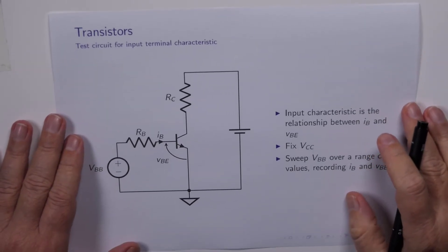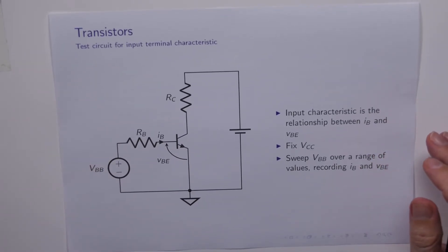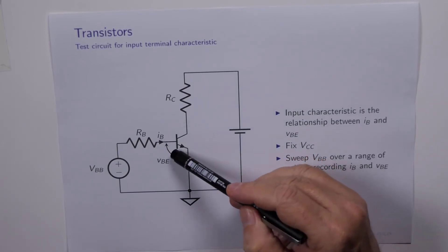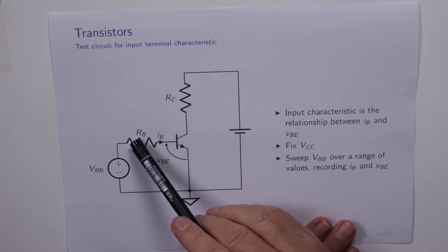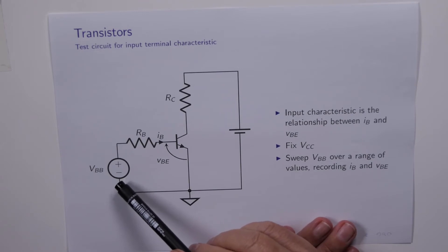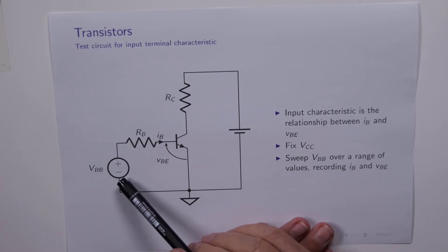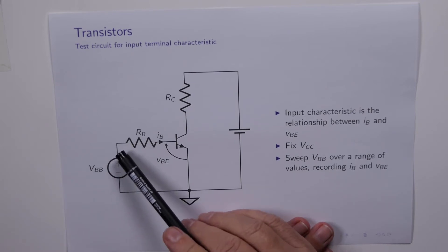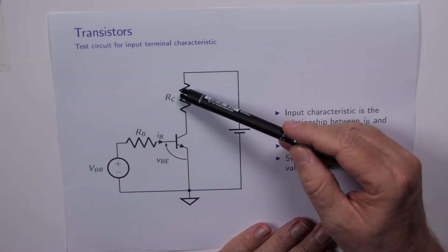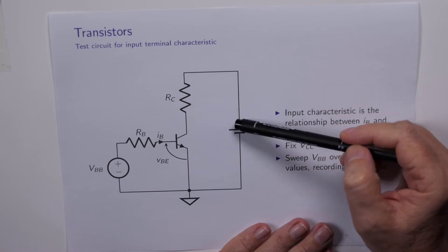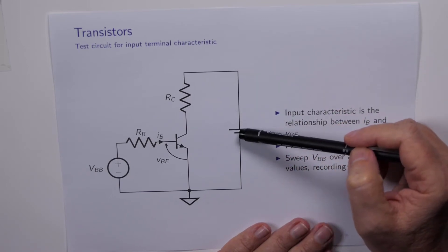So let's have a look at the test circuit for determining what we call the input terminal characteristic. Here it is. We've got the transistor sitting in the middle here, our NPN transistor. The base is connected via this resistor to VBB, which is a variable DC voltage source, and this voltage source goes between zero and some positive value.